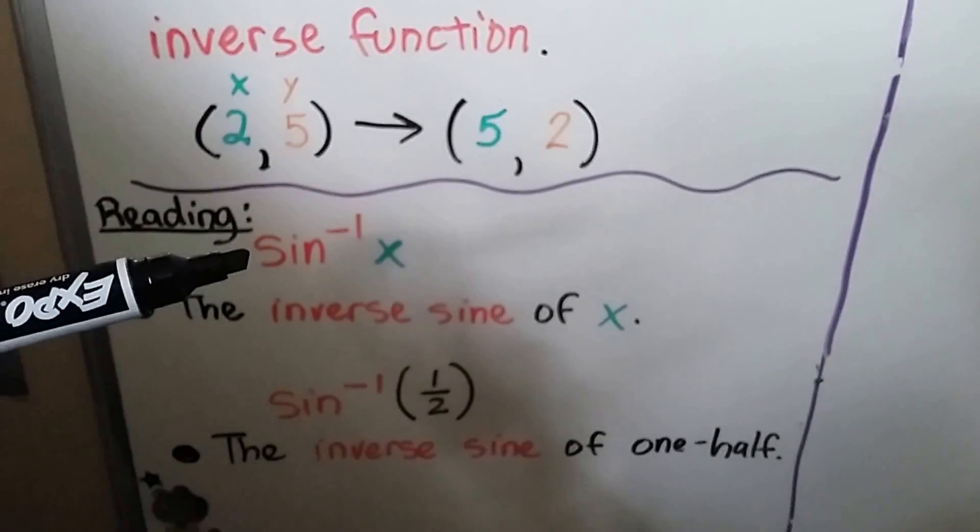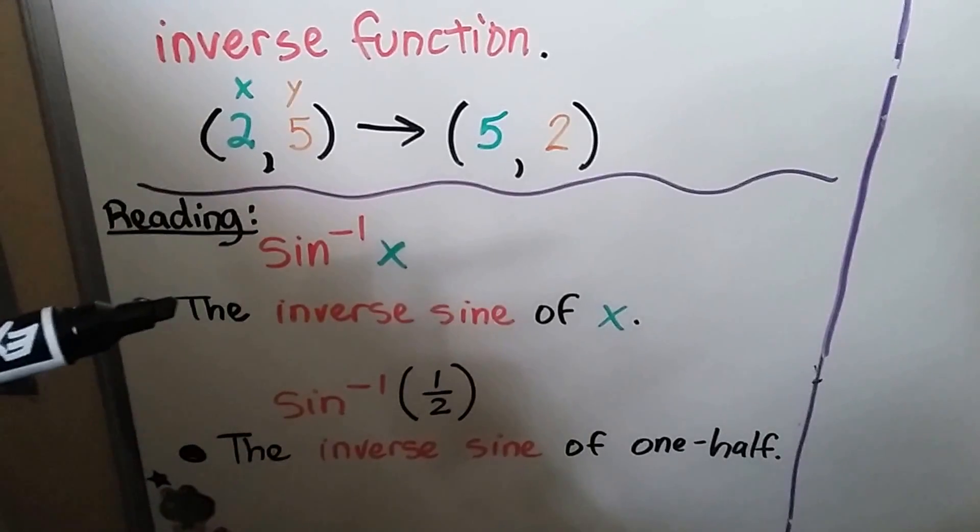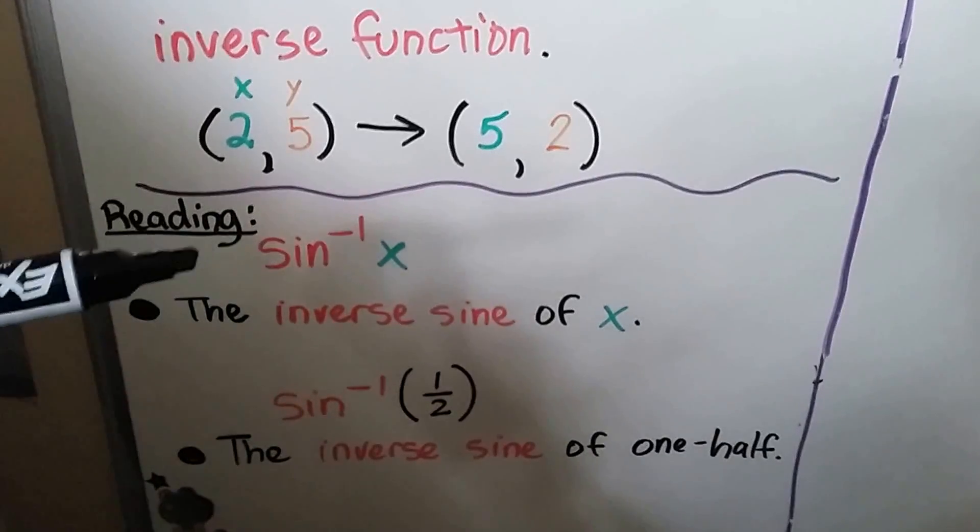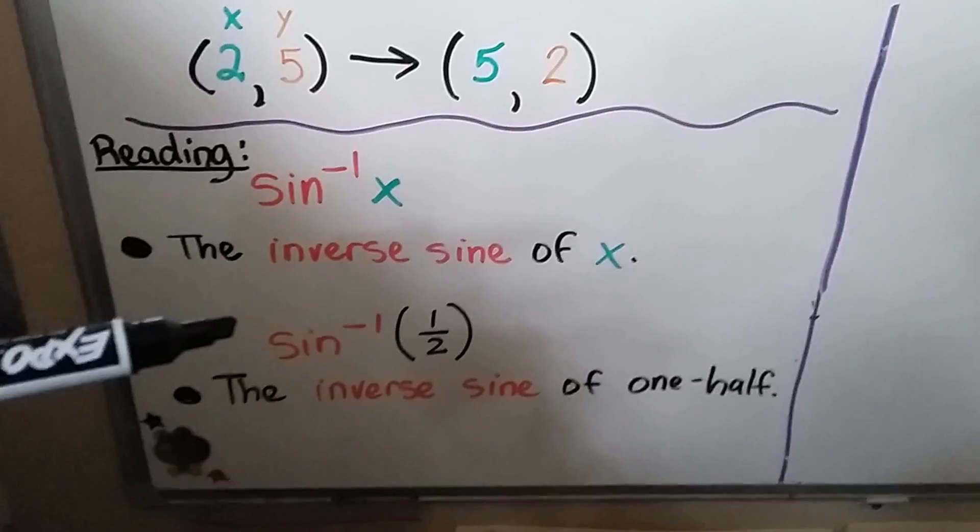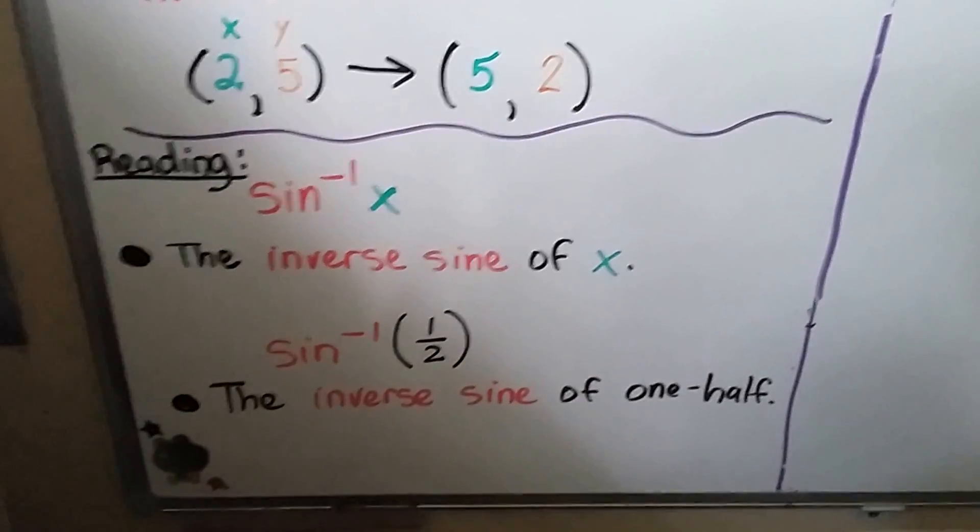Now, we're going to be dealing with the inverse of sine, cosine, and tangent. To read this, we would see the inverse sine of x. This would be the inverse sine of one-half. That's how we read them.